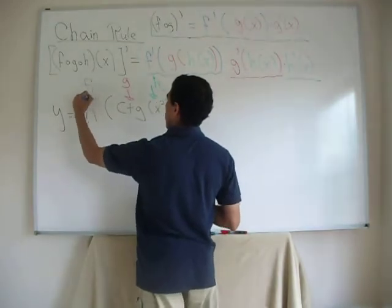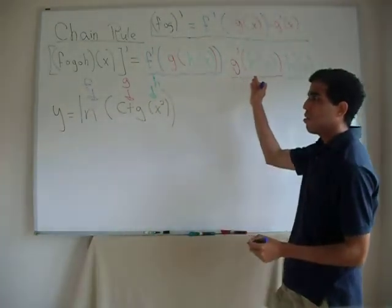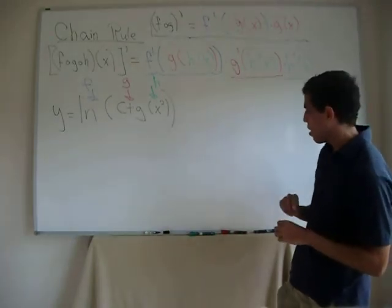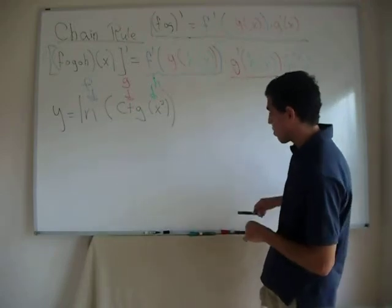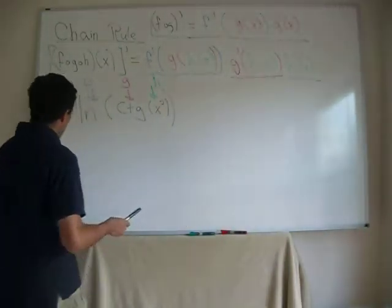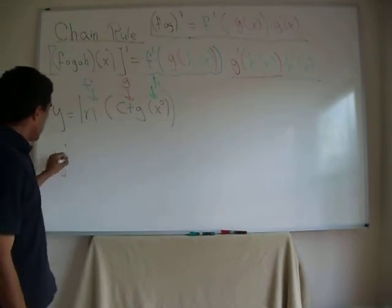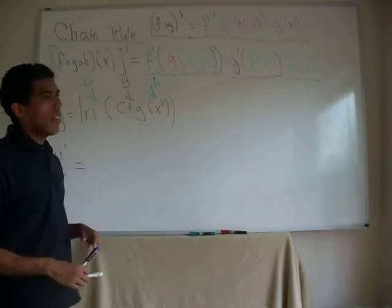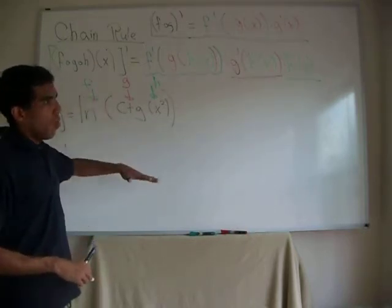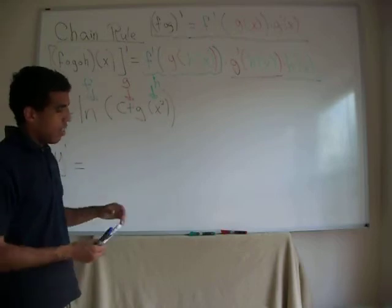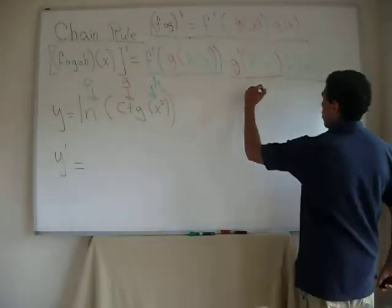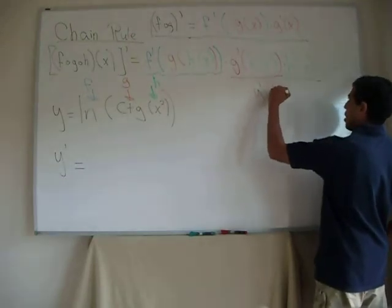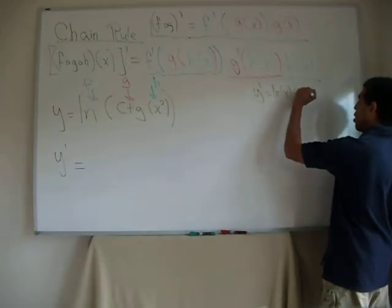So what comes next? Simply follow the chain rule for composition of three functions that we have done so far successfully. So y prime is going to be derivative of f. What is the derivative of a logarithmic function? One over the argument. If y prime of logarithmic of x is one over the argument.